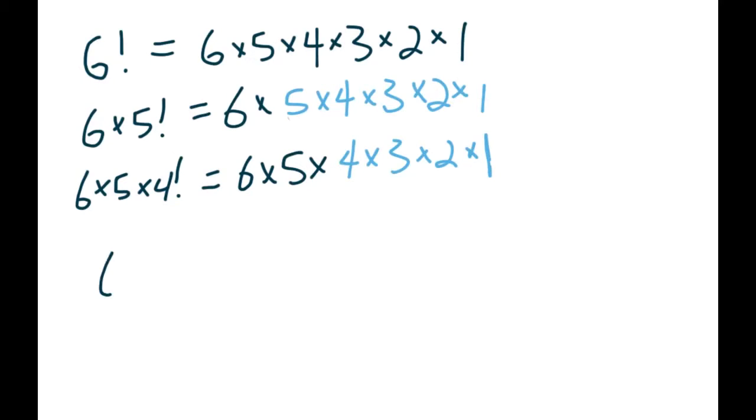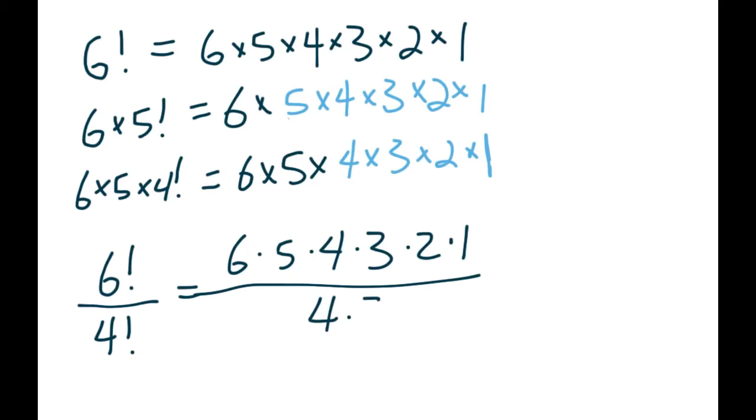It also works the same if you were dividing. So if I said I want to divide 6 factorial divided by 4 factorial, you can see that we'd have 6, 5, 4, 3, 2, 1 on the top. I'm just going to use dots, because it's a little bit faster to write. So 6, 5, 4, 3, 2, 1 on the top, and then on the bottom, 4 factorial, you'd have 4, 3, 2, 1. Because we're dividing, you can see that those ones would cancel. So 6 factorial over 4 factorial would be just the 6 times 5, which would give us 30.